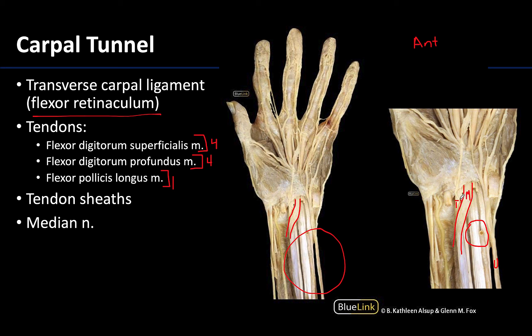You can also see this small cutaneous branch that is branching off proximal to the carpal tunnel. Right here is the carpal tunnel because here's the roof — the transverse carpal ligament — and this particular cutaneous branch branches off before, or proximal to, the tunnel. This is why the skin over the thenar eminence and palm region won't be affected during carpal tunnel syndrome, because this branch came off before the compression site within the carpal tunnel.